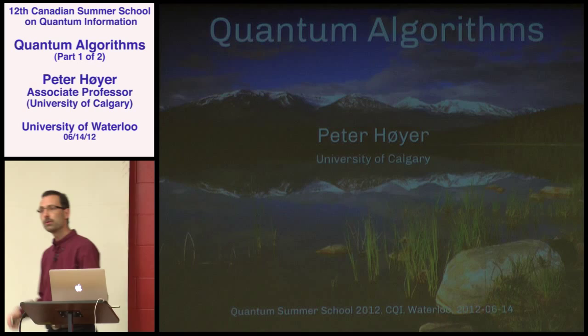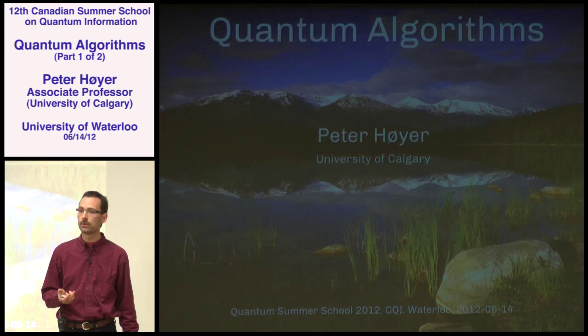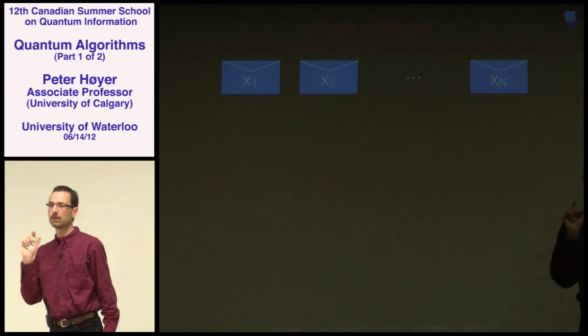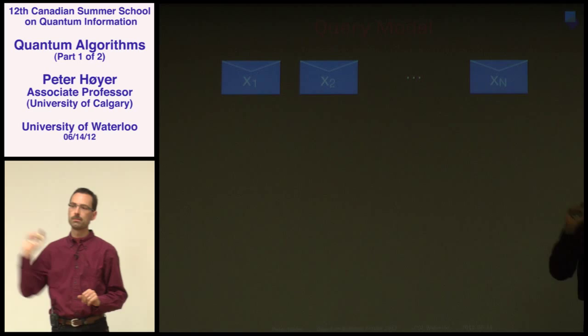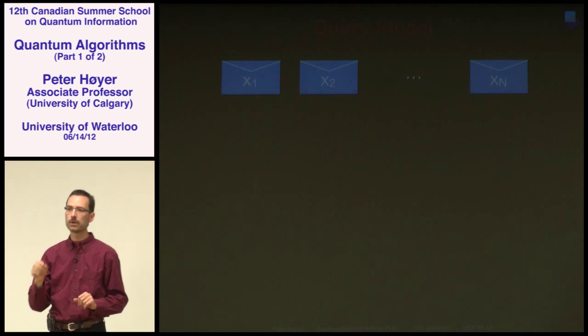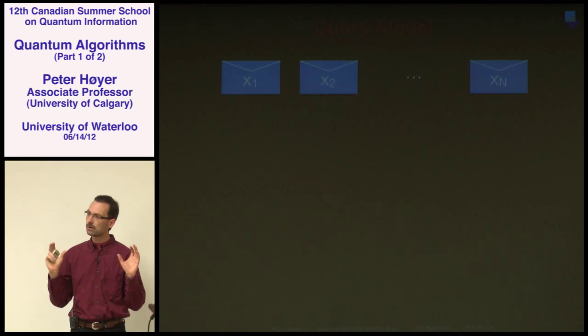I'm going to continue discussing quantum algorithms — what Martin and John talked about in the beginning of this week. What can you do in terms of computations on a quantum computer? I'm going to talk about a specific model, not the Shor model with factoring, but more the Grover-type and random walk model where you talk about queries. You can equate queries with time.